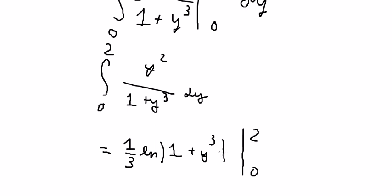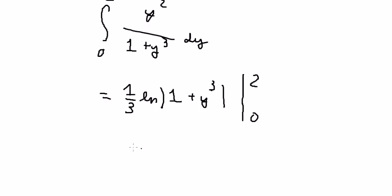We put number 2 in here, number 0 in here. And we got about 1 over 3, ln of number 9, and number 9.